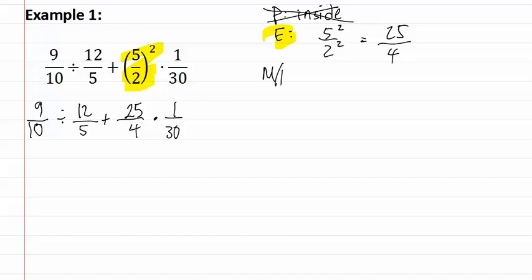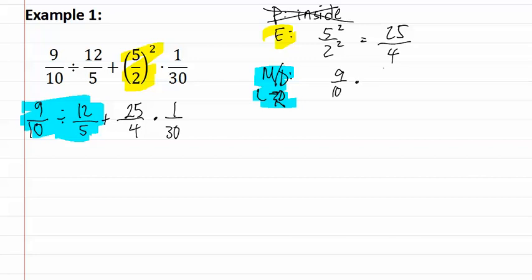Next, we move on to multiply and divide, which goes left to right. As you can see, we're actually going to be doing our division first. Remember with division, you turn it to multiplication and you use the reciprocal. Also remember, we're going to reduce. Three goes into nine three times, and twelve divided by three is four. Five goes into five once, and five goes into ten twice. This gives us three-eighths, which we place back in the problem.